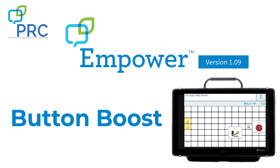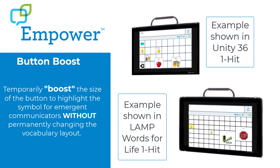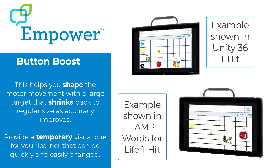Empower version 1.09, now with Button Boost. Button Boost lets you temporarily boost the size of a button to highlight the symbol for emergent communicators without permanently changing the vocabulary layout. This helps you shape the motor movement with a large target that shrinks back to regular size as accuracy improves. Provide a temporary visual cue for your learner that can easily be changed back to the regular size.